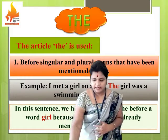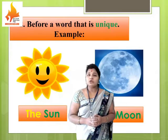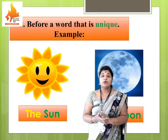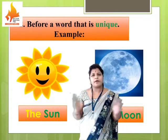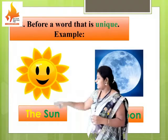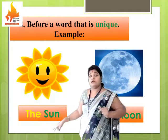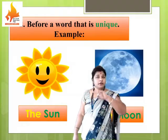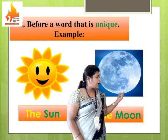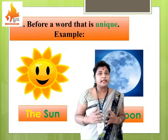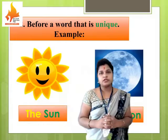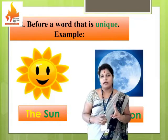The next use of article 'the' is: we can use it before unique things, or before things which are unique. Unique means extraordinary, unusual, very special. For example, 'sun' — this is extraordinary, this is unique, so we use article 'the' before it. Similarly, 'moon' is also an extraordinary and unique thing, so we use article 'the' before moon as well. You have to use article 'the' before all unique things.